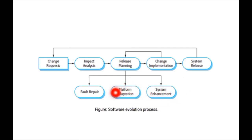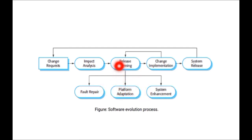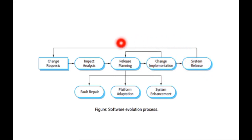In release planning, you can do fault repair, or you can do system enhancement by adding extra features, or you can do environment or platform adaptations. So maintenance has three types: error corrections, system enhancements, and hardware/software environment changes. Whatever it may be — platform adaptation, fault repair, or system enhancement — you implement it and then release the new system. The same process repeats again from the start.